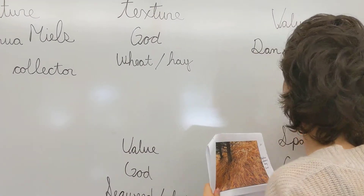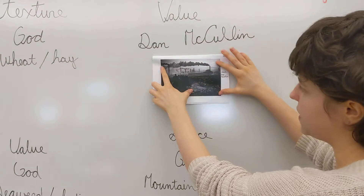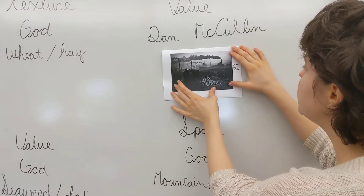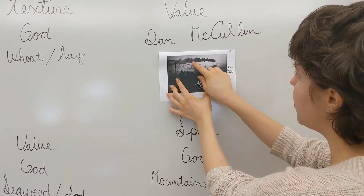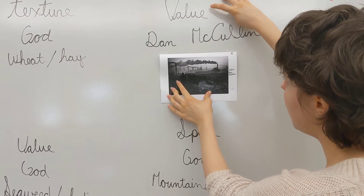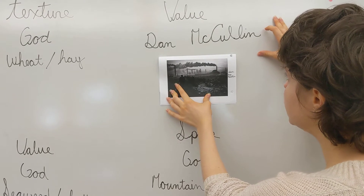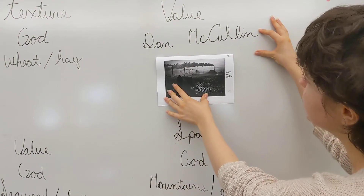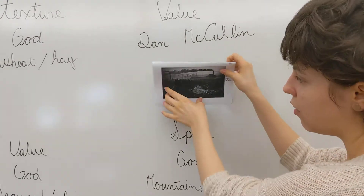And then we're going to deal with value. We're going to deal with this picture right here — the man walking by the railroad in the smoke. It's dealing with the element of value, and it's by the man Dan McCullen. He didn't name his picture, so it doesn't have a name.